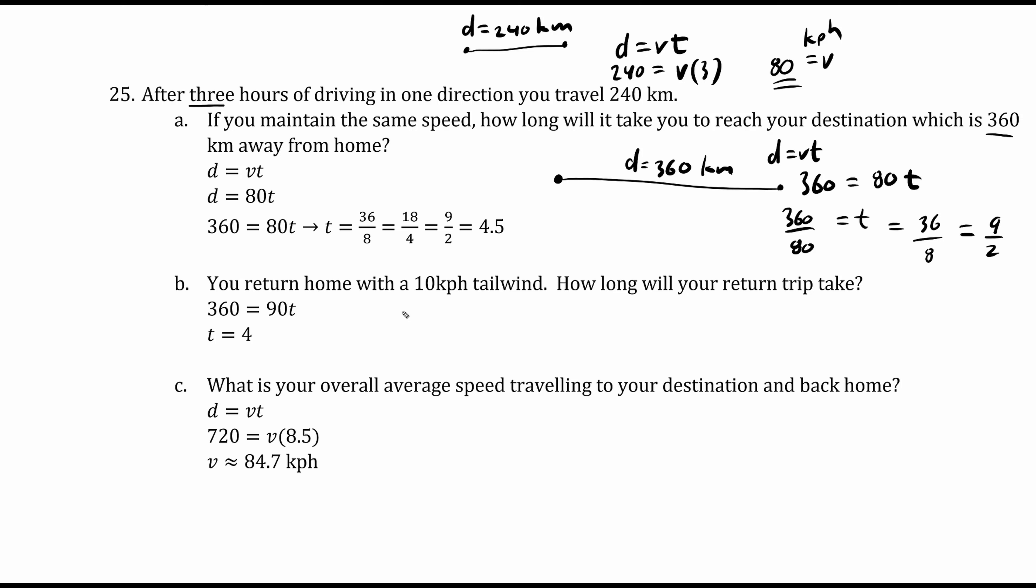You now return home with a 10 kilometer tailwind. The tailwind makes you faster by 10 kilometers an hour, so instead of a velocity of 80 we now have 90. To return home we travel 360 back. d equals vt, 360 equals the velocity which is now 90 times t. Dividing both sides by 90, t equals 4 hours, and it makes sense that we're faster this time.